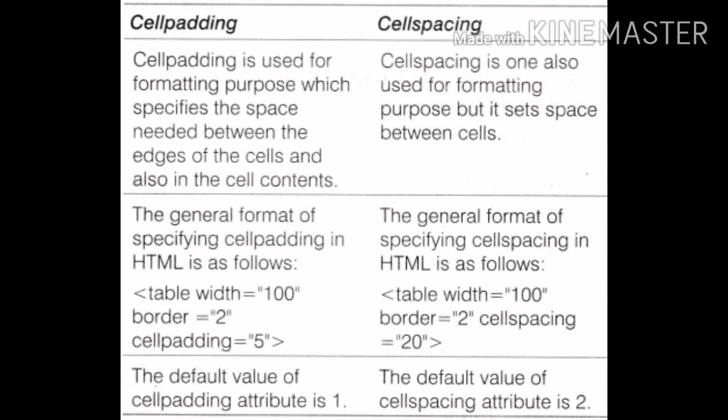The default value of the cell padding attribute is 1, whereas the default value of the cell spacing attribute is 2.